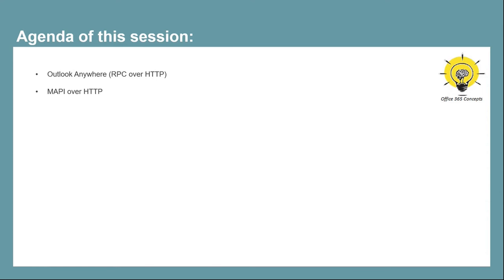In this particular video, we will be talking about Outlook Anywhere and MAPI over HTTP. We will discuss how these two protocols work, what is the difference between these two protocols, and how to configure and test Outlook Anywhere and MAPI over HTTP in Exchange Server 2019.